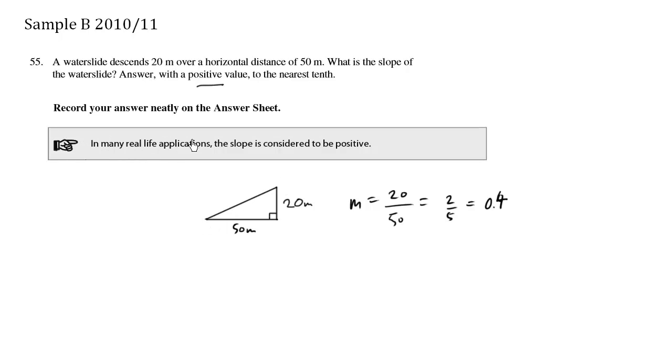Now the reason why we have this note here: in many real life applications, the slope is considered to be positive. It's because if we drew the slide this way, we have 20 meters this way and then 50 meters across.